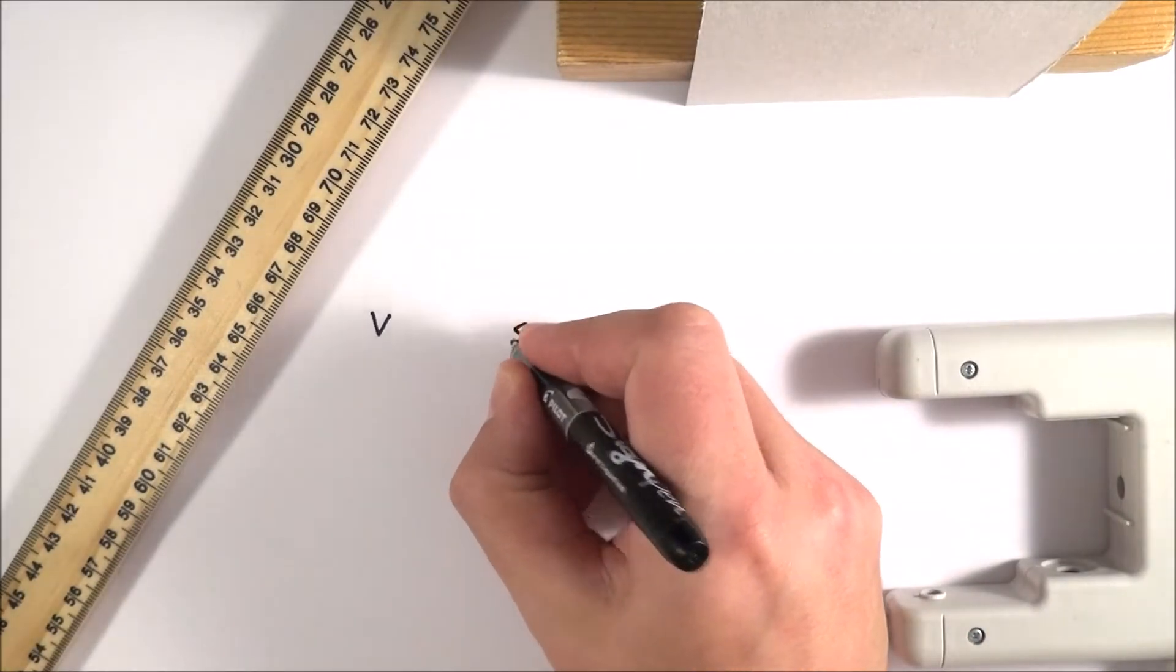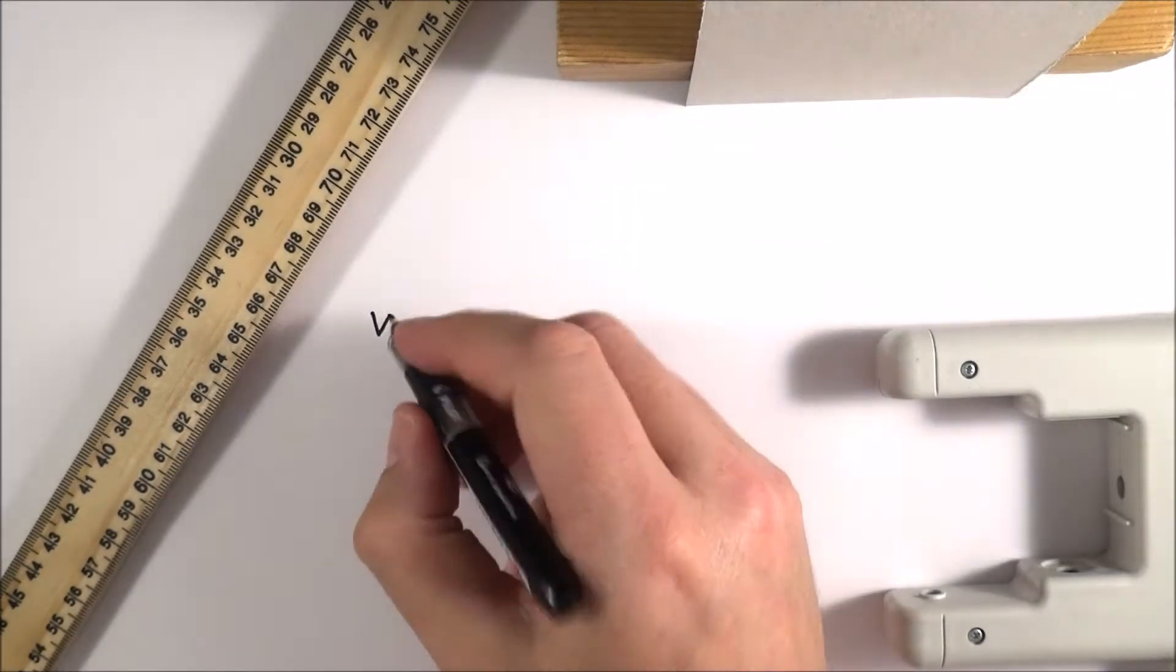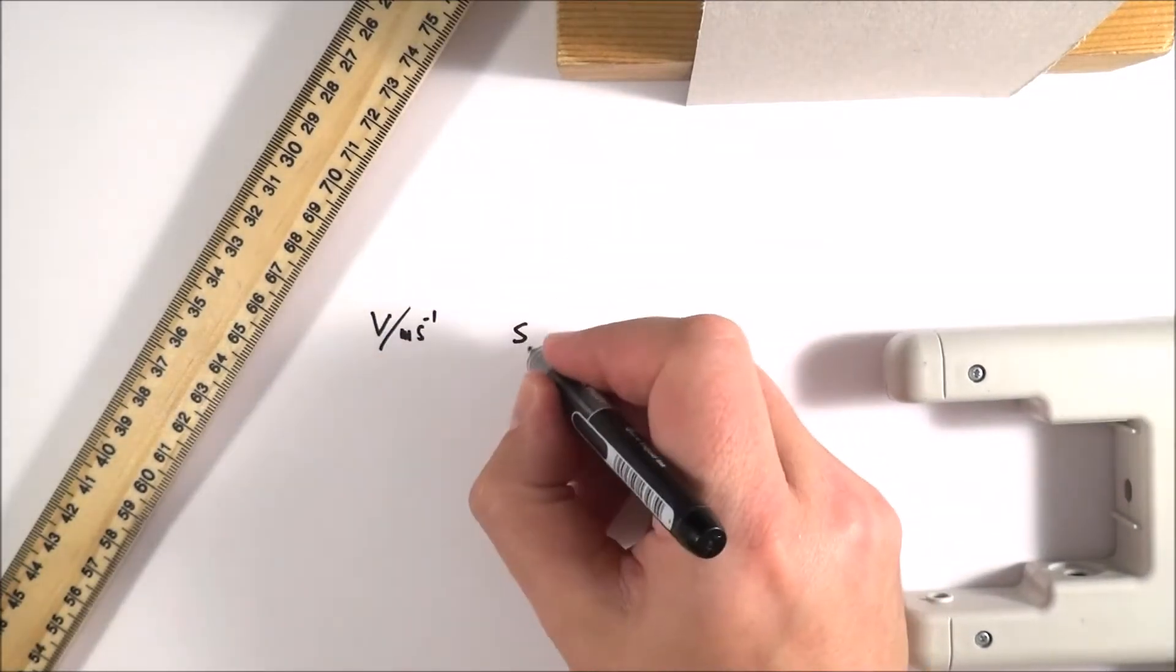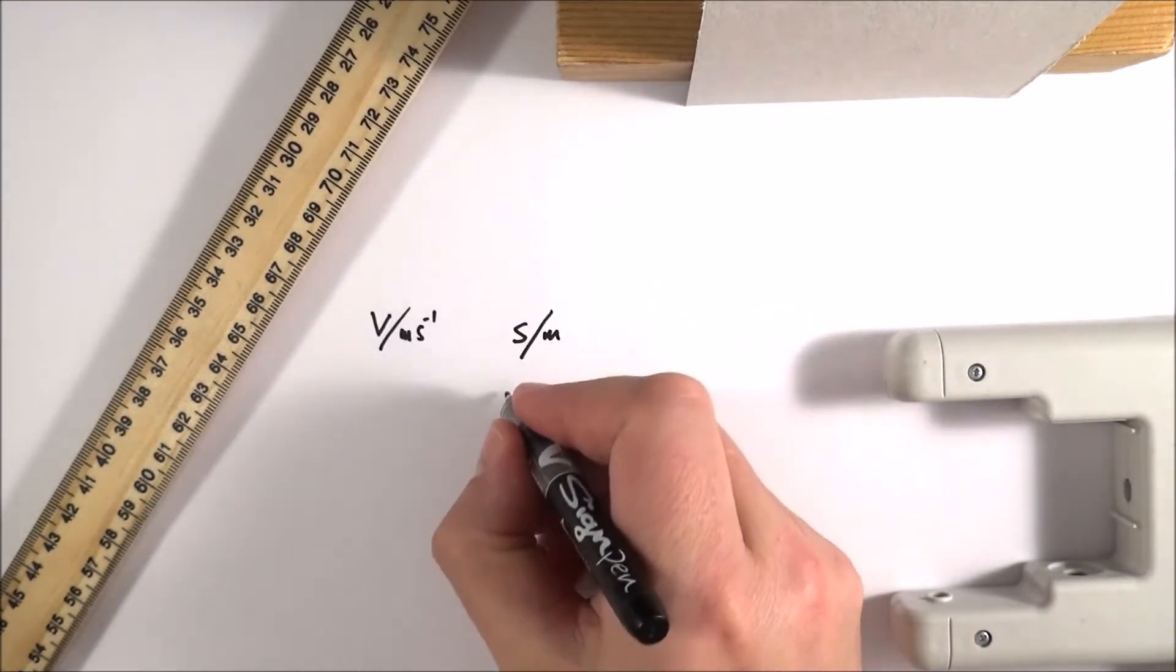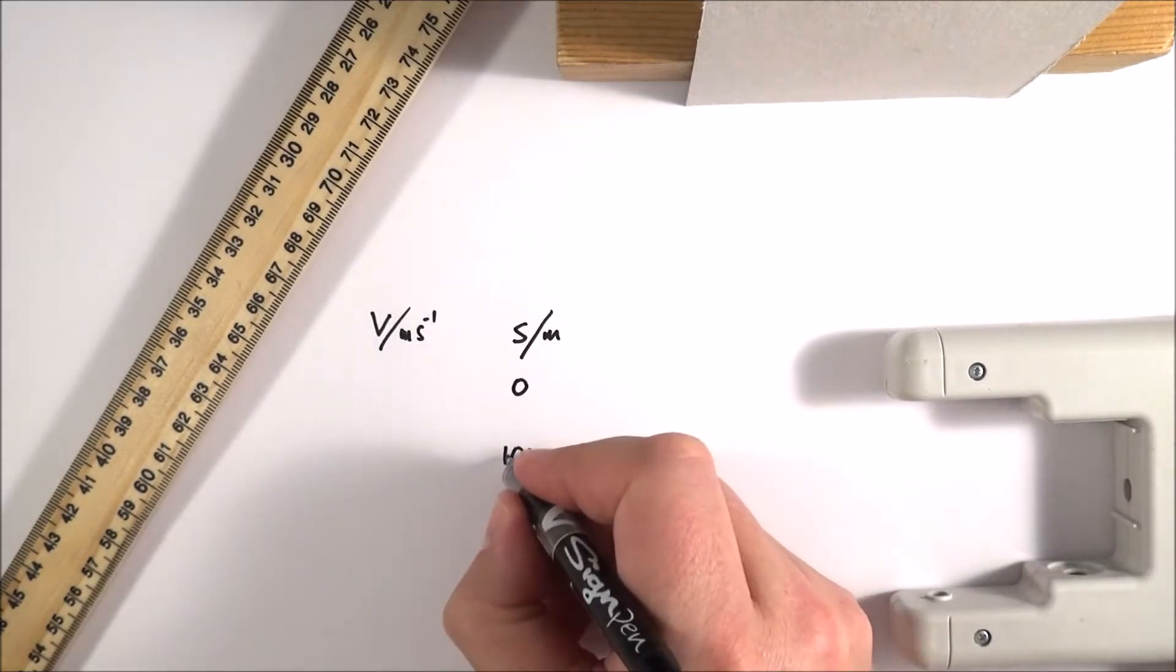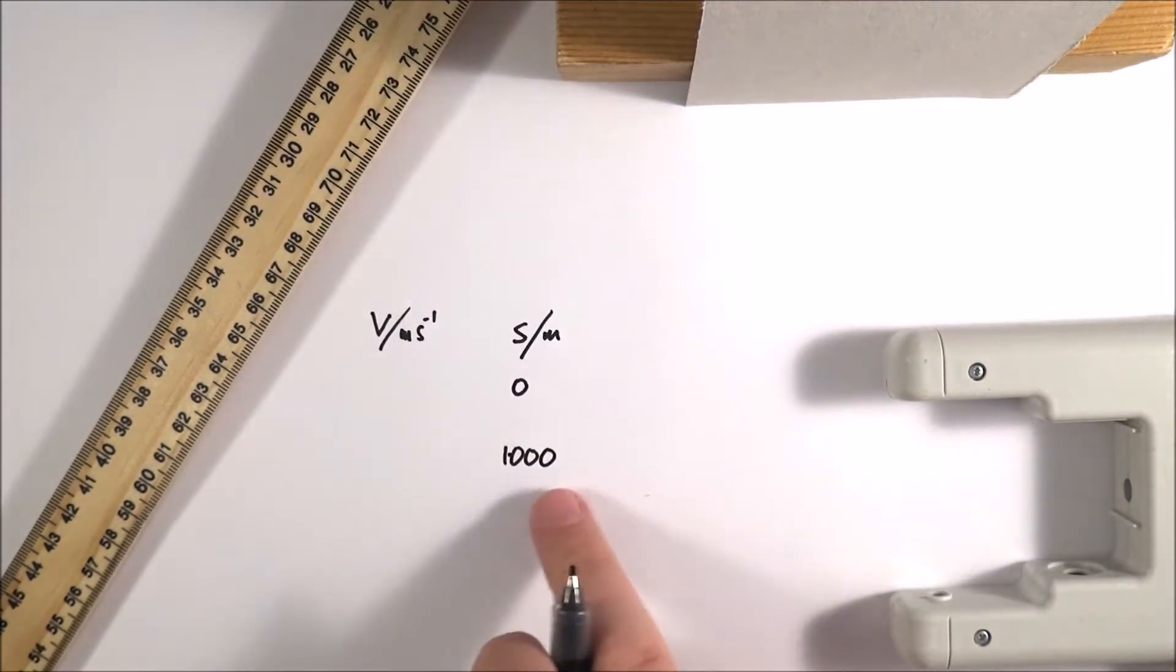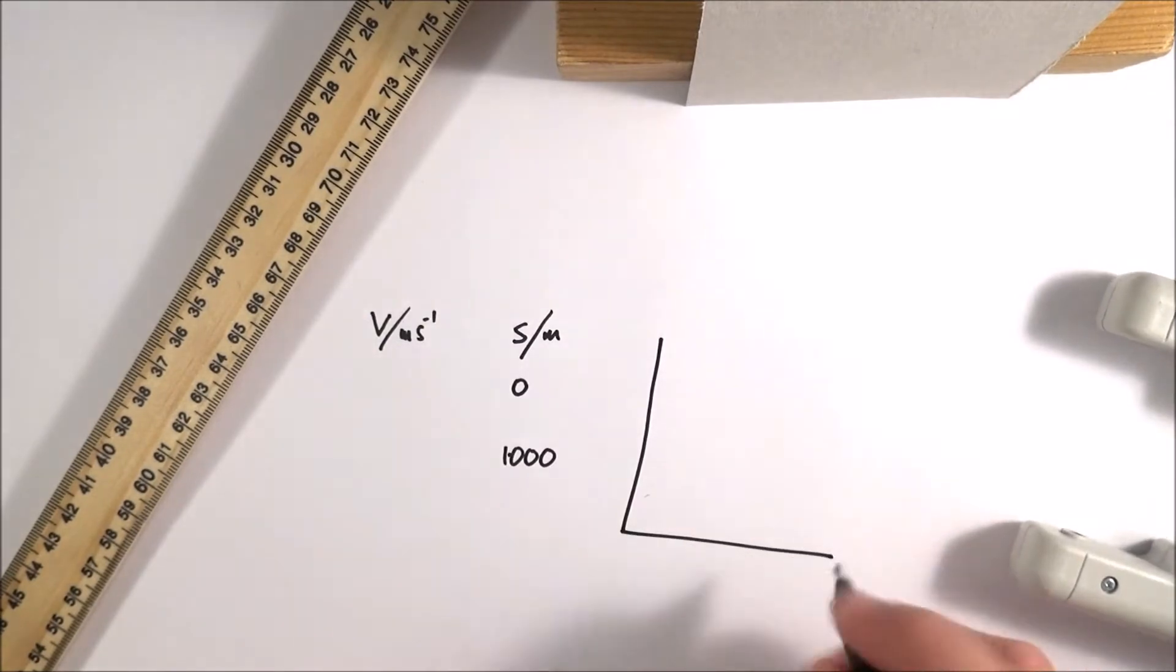What you can then do is look at the stopping distance for that block of wood, so the distance it takes to stop. Obviously velocity measured in meters per second and the distance measured in meters. The range of distances you want to go from range from about zero down to 1.000 meters because we're measuring to the nearest millimeter. Now this is something where it's very hard to take repeat readings.